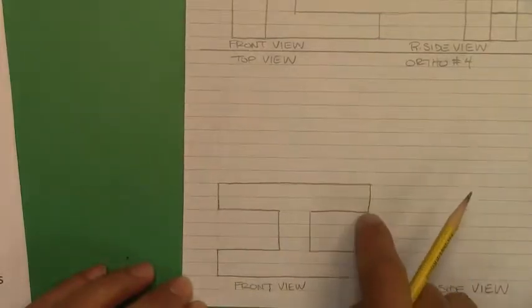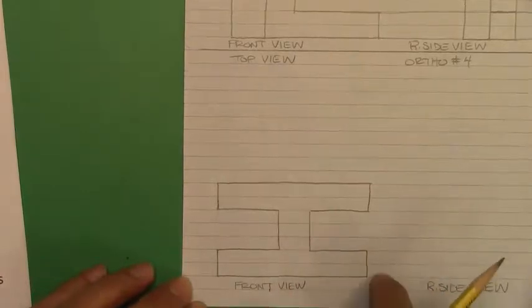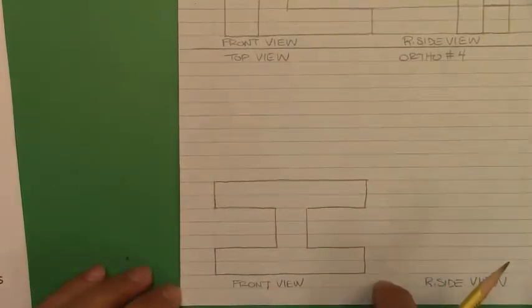Once again, we're looking for corners. We're looking for any horizontal lines. I'm sure you'll find that you should have four projection lines going from front to right side.